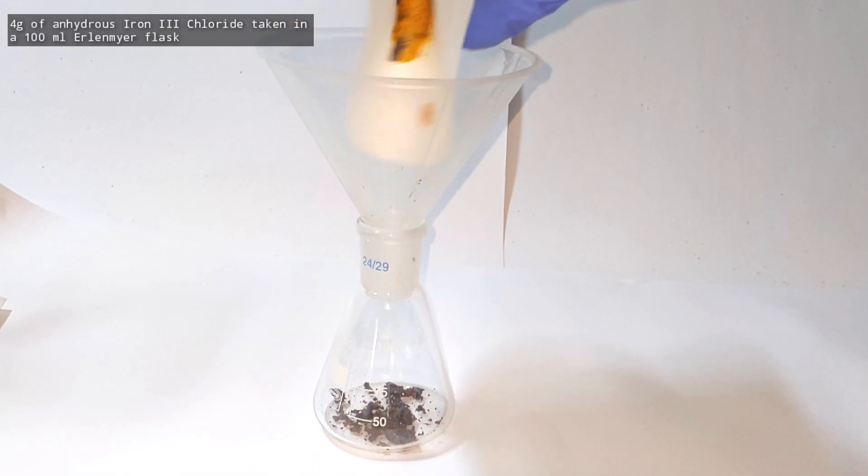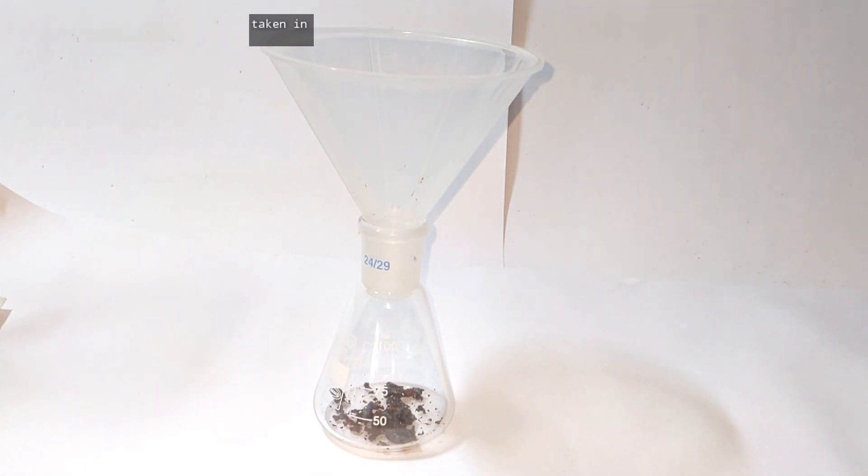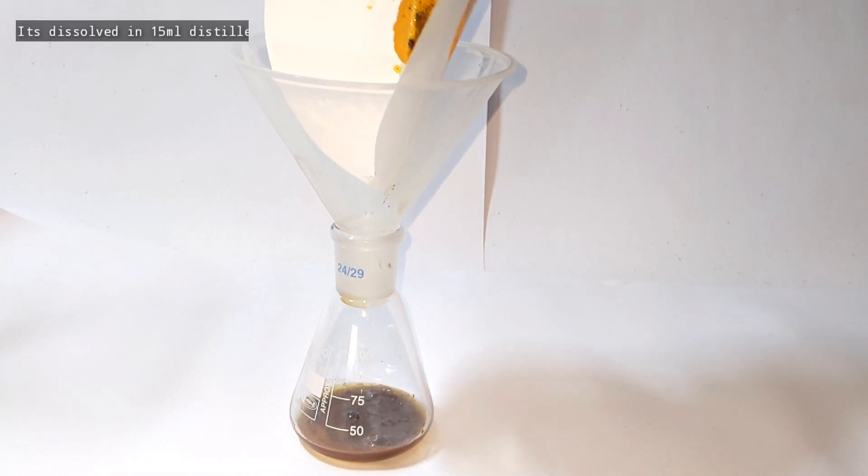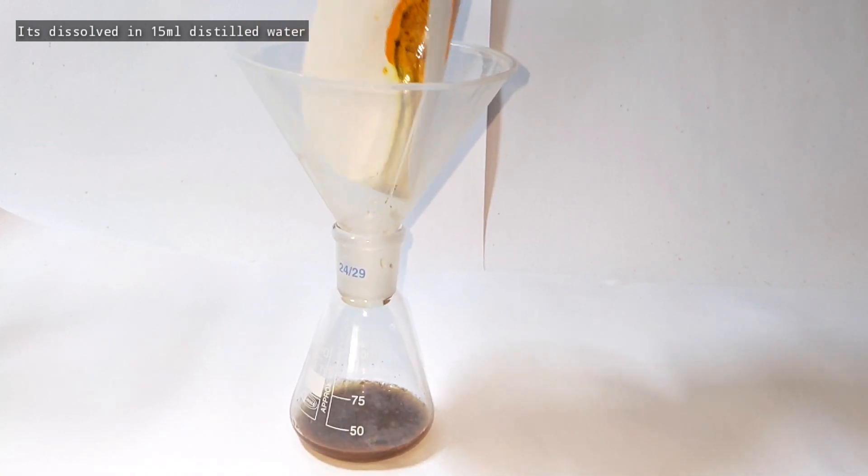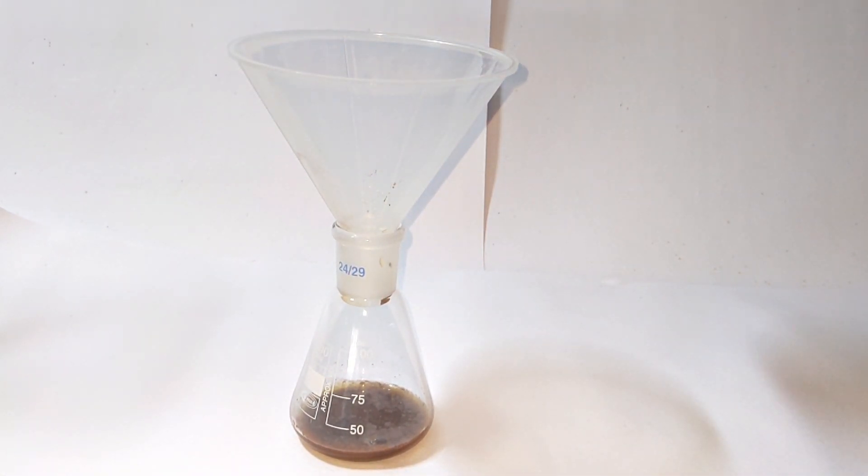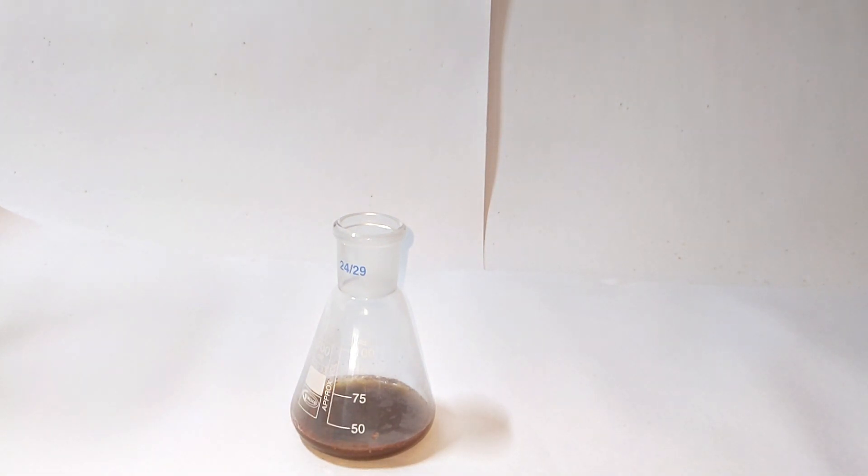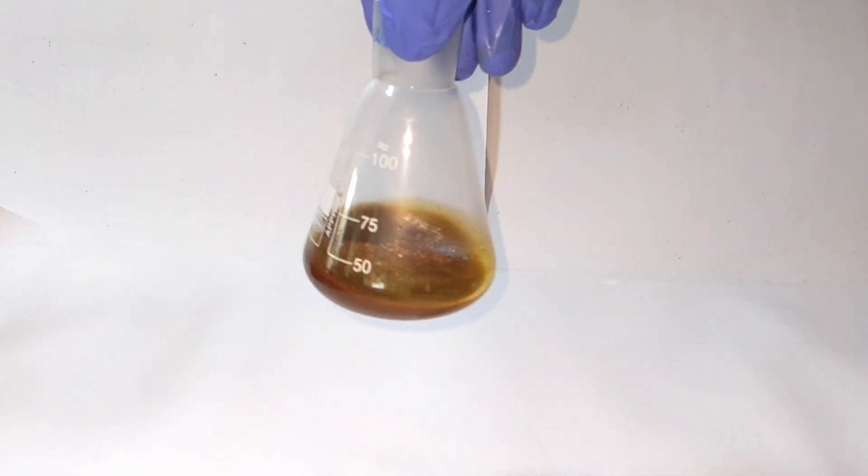Most of the iron(III) chloride got stuck onto the filter paper as it adsorbed water, so I had to use water to wash off the compound from the filter paper. A total of 15 milliliters of distilled water was used. The funnel was then removed and the flask was shaken vigorously to dissolve maximum possible compound in water.